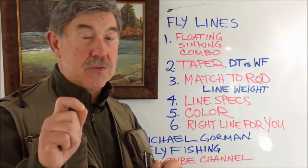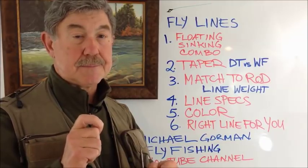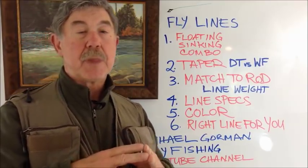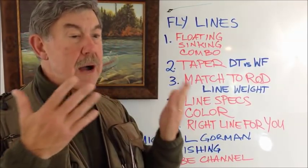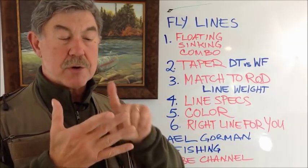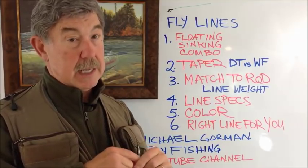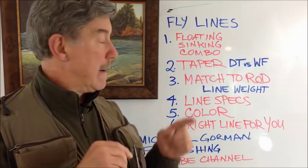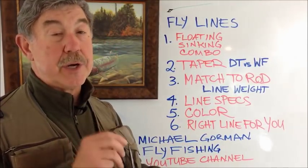A brightly colored fly line is always my choice in a floating fly line. To summarize: if you're a generalist fishing a broad spectrum of waters — streams, rivers, lakes, and ponds — the first fly line you should consider is a floating fly line with a weight forward taper, brightly colored, and matched to the rod you're going to cast it on.